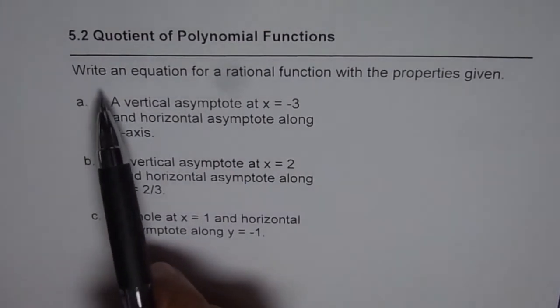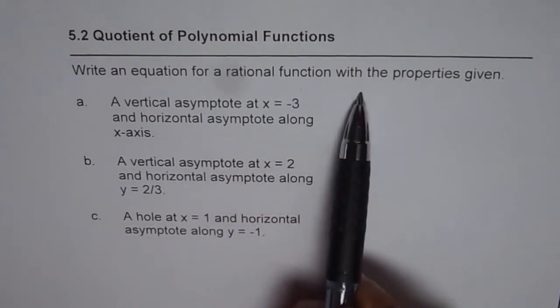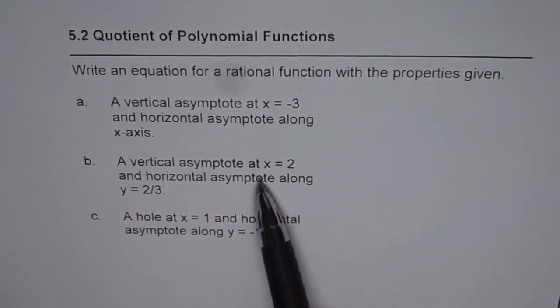The question is, write an equation for a rational function with the properties given. So we have got three different scenarios. I will try to give you the best and the simplest solutions for all of them. And slowly we are going to complicate these conditions and understand more about rational functions. So try to go in sequence in my playlist so you can appreciate each part. Now in these three, we are trying to understand how to relate vertical and horizontal asymptotes with the equation of rational function.